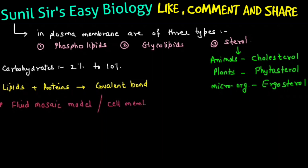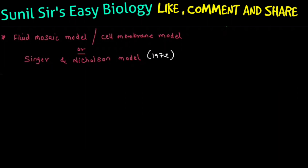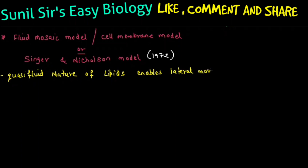The most important cell membrane model is the fluid mosaic model, also known as the Singer-Nicholson model. It is called the fluid mosaic model because the proteins are embedded in a mosaic form in the fluid of lipids. What makes the cell membrane fluidic? The quasi-fluid nature of the lipid is because of the phospholipids, and this quasi-fluid nature allows the movement of proteins on the cell membrane.